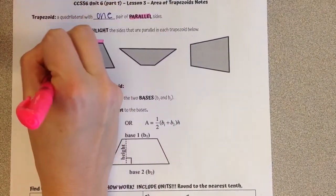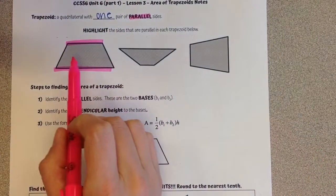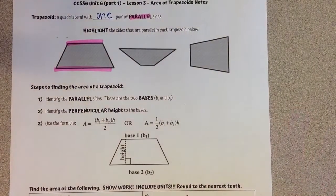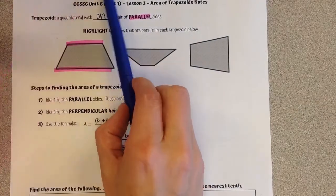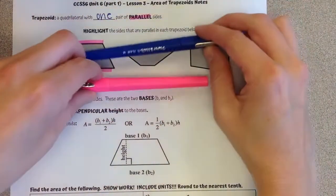This set right here, if we continued those lines on and on forever, they would never intersect, versus if we look at these two here, they would eventually intersect.